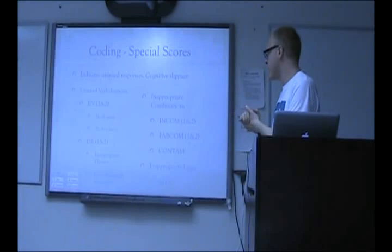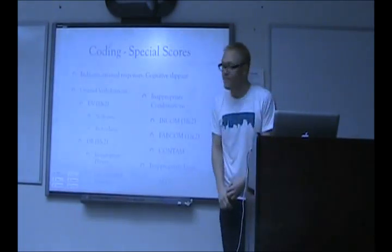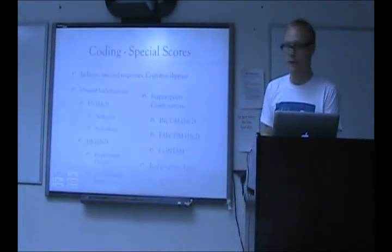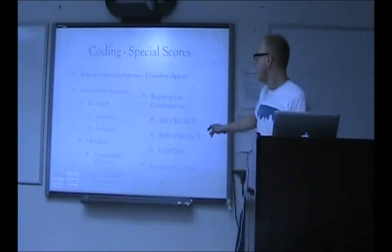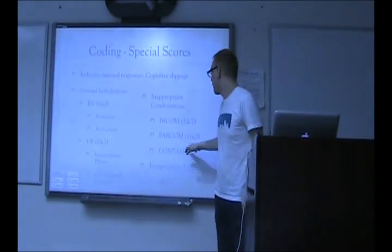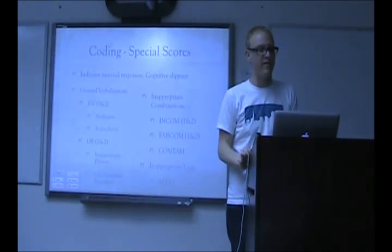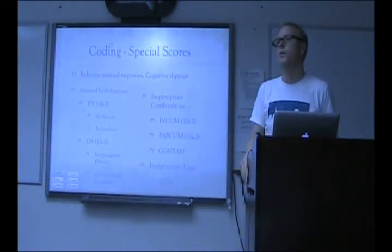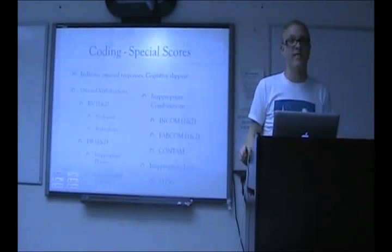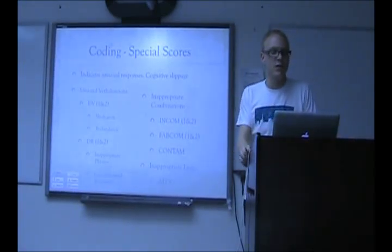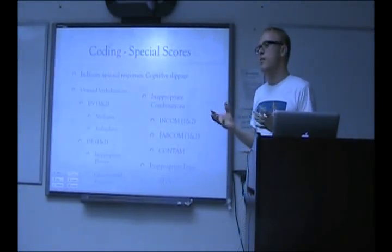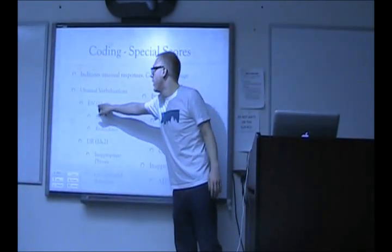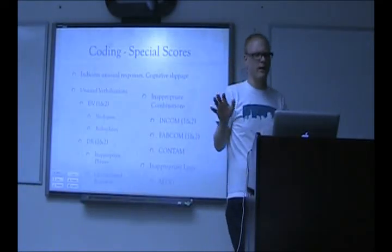Some of them can be a little confusing. In general, there are different types. There are unusual verbalizations — that has less to do with what they see and more about how they say it. Some of them are content-based. And then there are levels one and two. Really, go into the workbook to see the difference — it's a subjective look at the examples — but usually one and two is based on level of bizarreness. Something that's unusual but not too bad will be DV1, whereas something that's really, really weird will be a two.